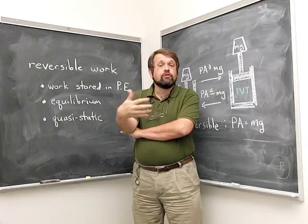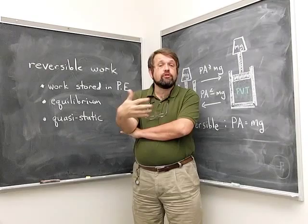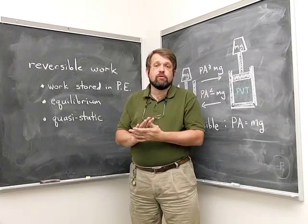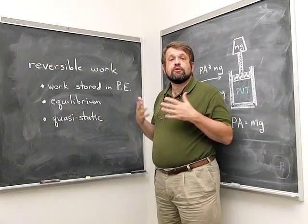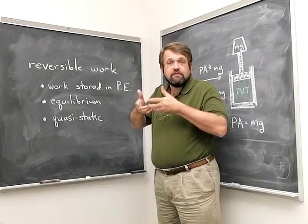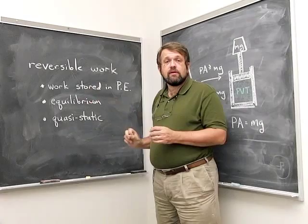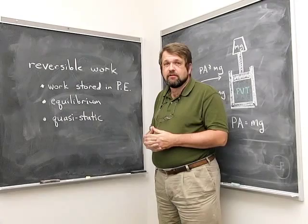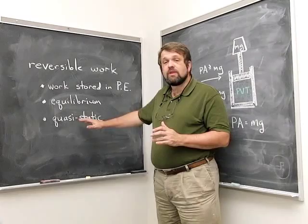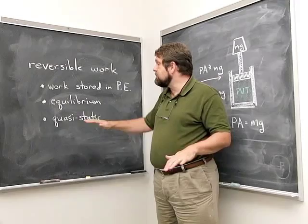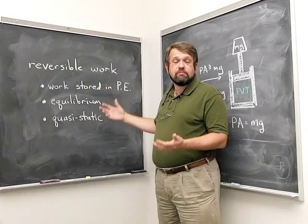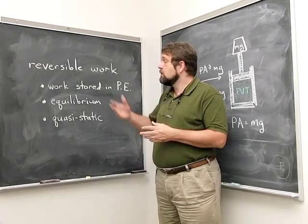We can do work reversibly on our surroundings. When we do that, there are some characteristics: the work is stored in some kind of potential energy — in this example, the gravitational potential energy of lifting the weight. The process happens close to equilibrium; at any given time, the forces are almost exactly balanced. And the process happens slowly — it's a quasi-static process. Very slow processes happening close to equilibrium, where work is stored in potential energy, are very close to reversible processes.